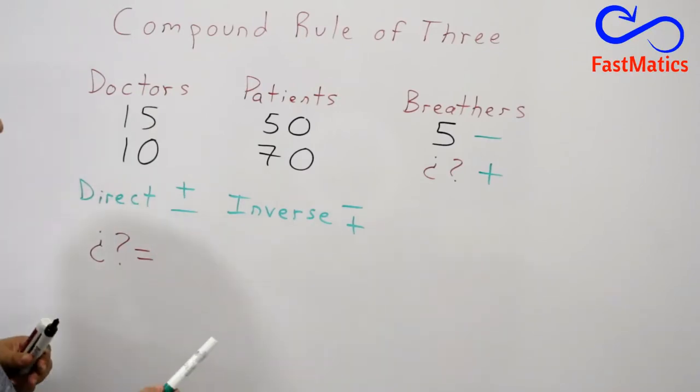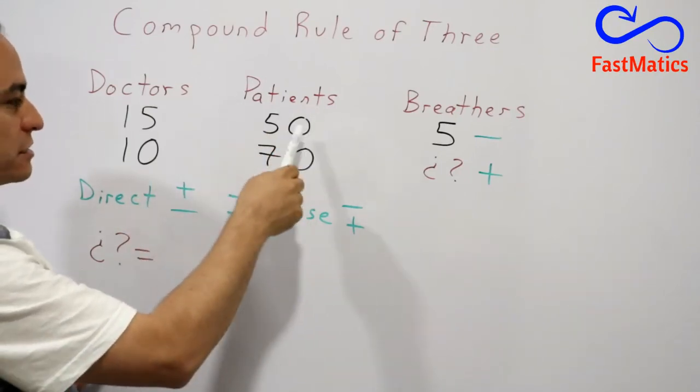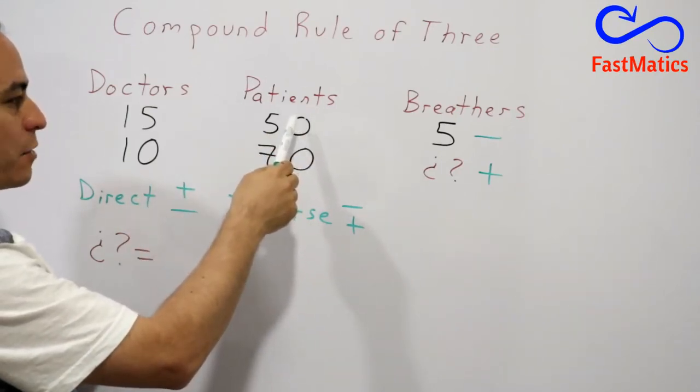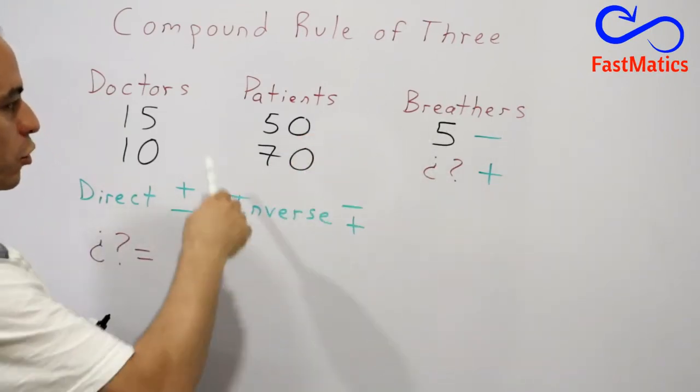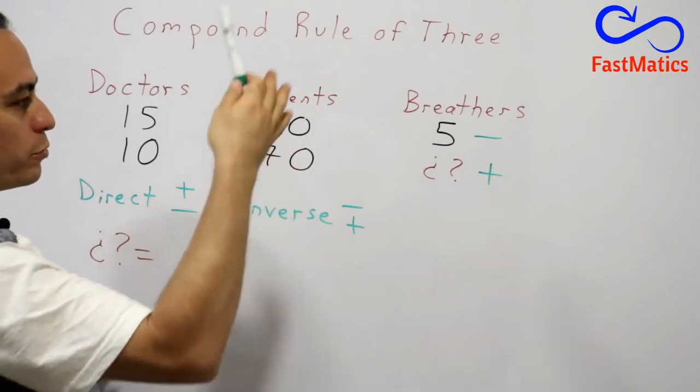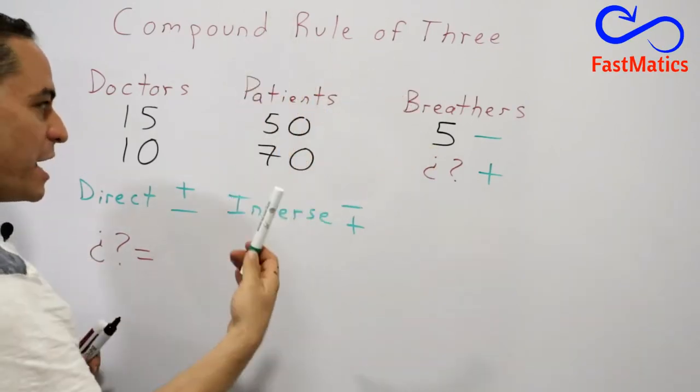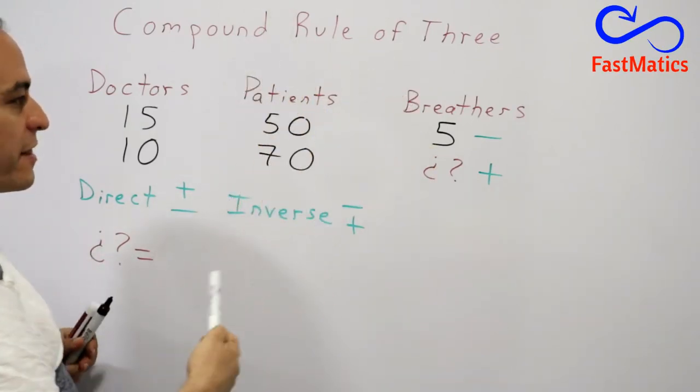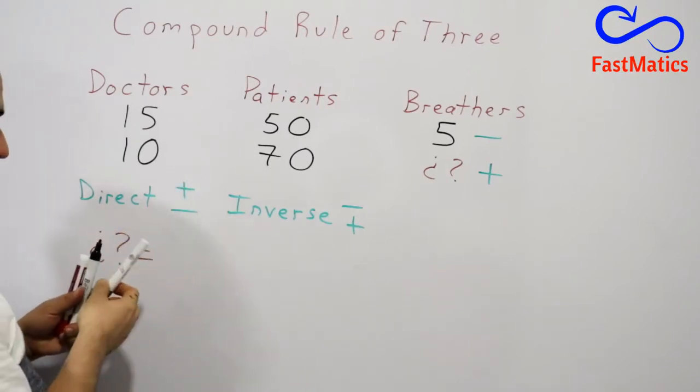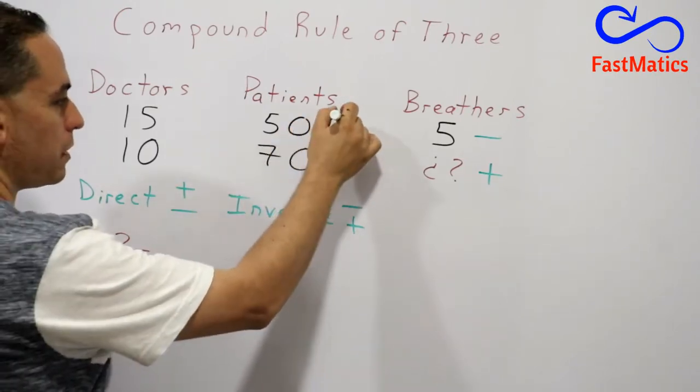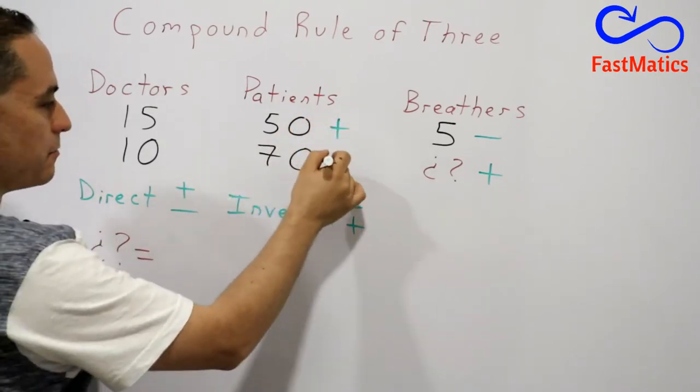Now we are going to compare breathers with patients. If we have more patients, do we need more breathers or less breathers? More patients, more breathers. Less patients, less breathers. That means we have a direct rule of three. So we are going to write plus here and minus here.